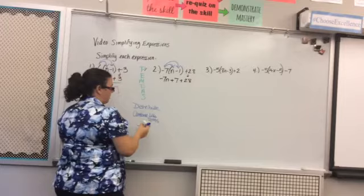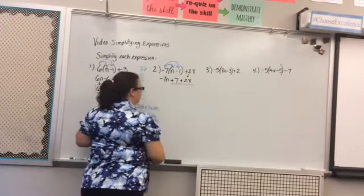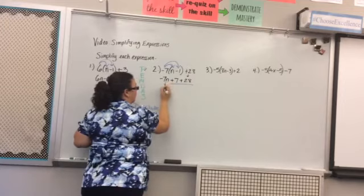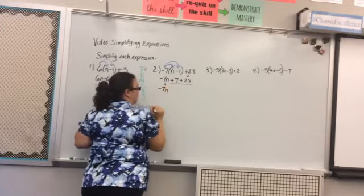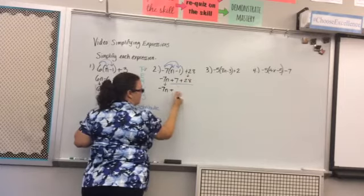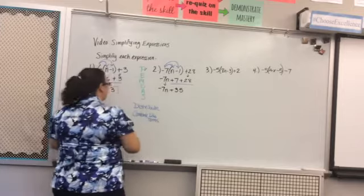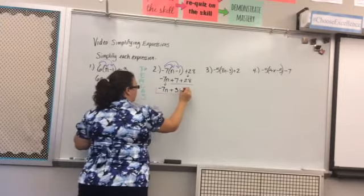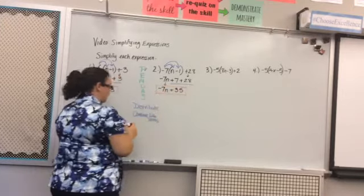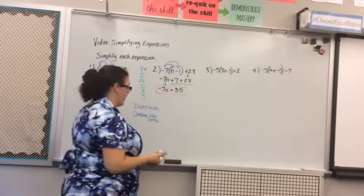I'm going to look through to see if I have any like terms that I want to combine. I have again two numbers at the end so I'm going to just bring down this negative 7n because there's nothing to combine with. Then seven plus 28 is going to be 35. It's a positive 35 so I put plus 35. That is my final answer for my simplified expression. I'm going to put a box around it. It's always good to do that. You can find your final answer in your work to circle it at the end or put a box around it.